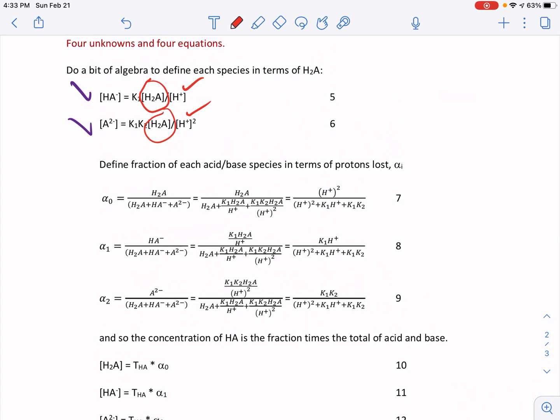So equation six comes out of the K1, K2 expression. So now I have HA- described in terms of the fully acidic form and H+. I have A2- described in terms of H2A and H+ squared. And then notice I have a K1 and a K1, K2 expression.